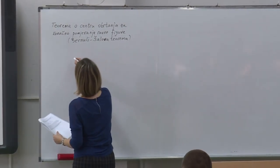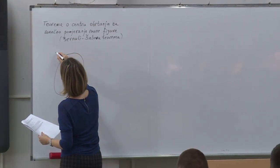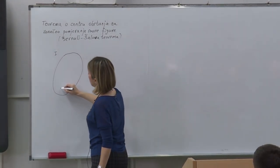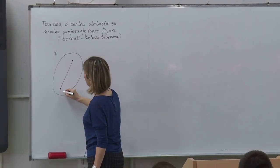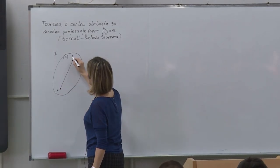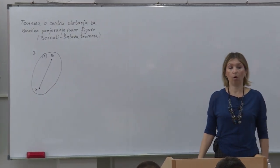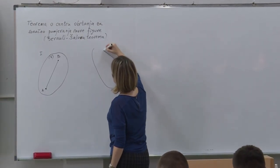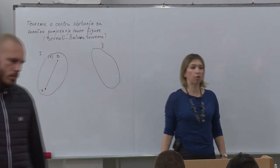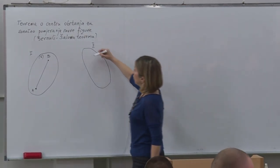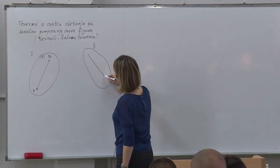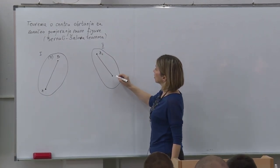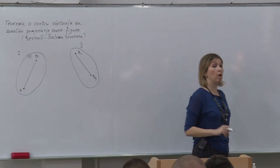Evo kako ćemo to pokazati. Crtamo našu ravnu figuru u datom položaju 1. Za dati položaj uočit ćemo na ravnoj figuri — označimo je sa S — uočit ćemo duž AB. Ova naša figura će zauzeti neki konačni položaj 2 nakon izvršene jedne rotacije oko tačke C. U položaju 2 ova naša duž biti će u takvom položaju da je tačka A zauzela poziciju A1, a tačka B poziciju B1. Govorimo o rotaciji.